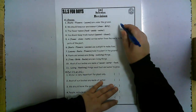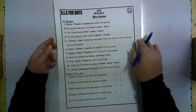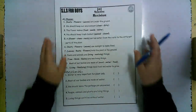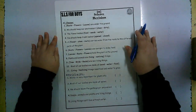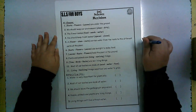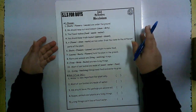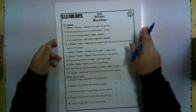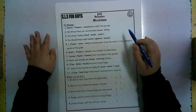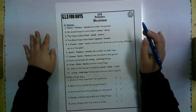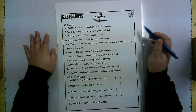Good morning. This is Ms. Yasmin. This is science revision. You have got your sheets as a PDF on the Telegram. First, we're going to solve the first question, Number A: Choose. When you do the choose question, you have to draw a circle around the correct answer or underline it. Don't write the answer — just draw a circle or underline the correct answer.